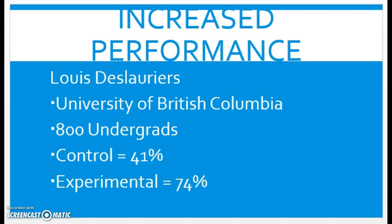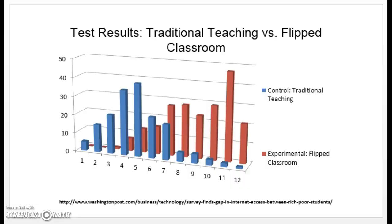Flipped classrooms are increasing student performance. Lewis D., a professor at the University of British Columbia, took 800 undergrads and found that the control group — a traditional classroom — averaged about 41%, compared to the experimental group, the flipped classroom, which scored an average of about 74%. A graph comparing the two shows the blue control group versus the red flipped classroom — it's astounding. The average nearly doubles from a traditional classroom to a flipped classroom.